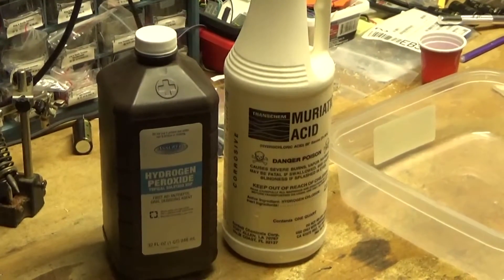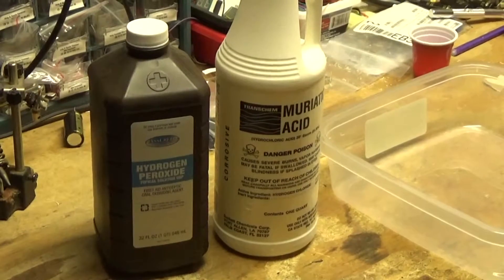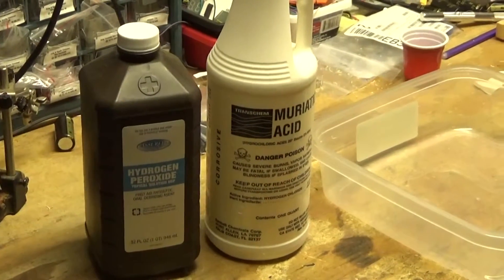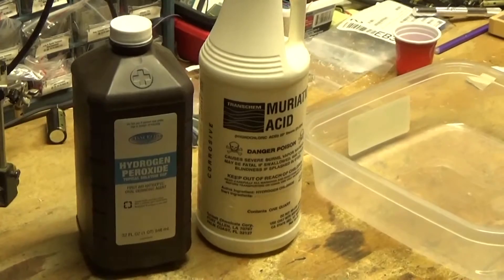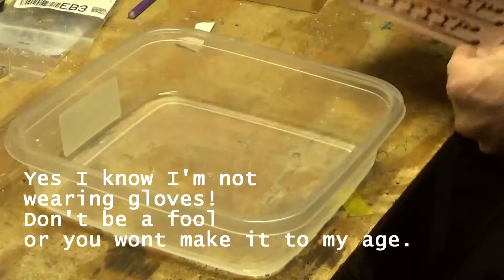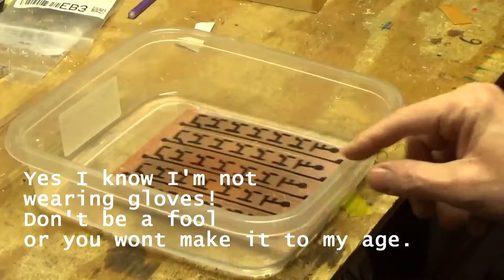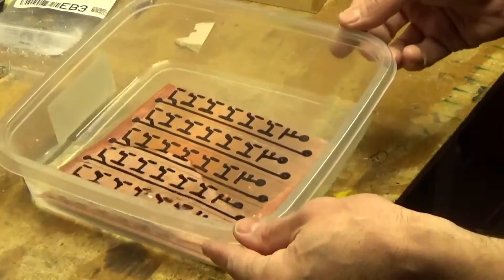So now it's time to make the solution to melt the copper off the boards. I use one part muriatic acid and then two parts of hydrogen peroxide. You should wear gloves and eye protection because this stuff is pretty caustic and you don't want to get any on your skin.